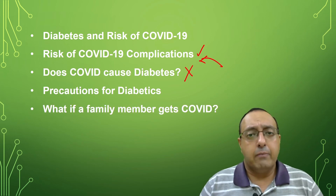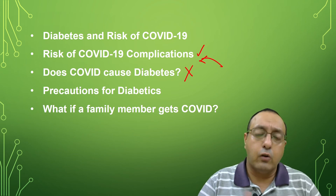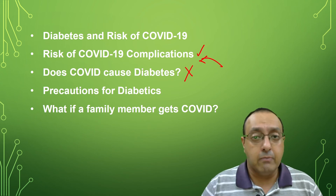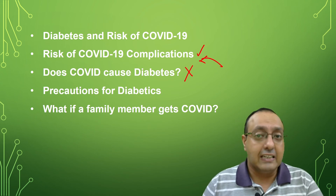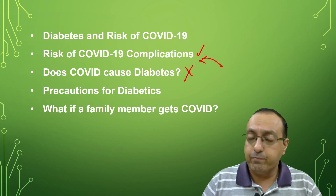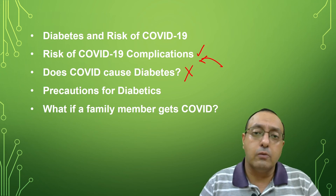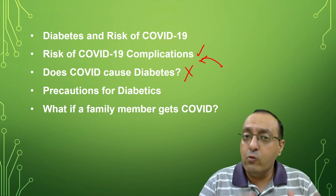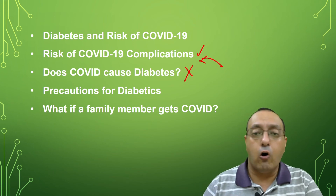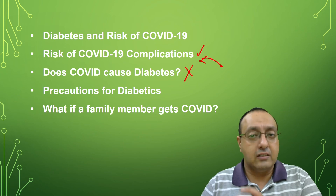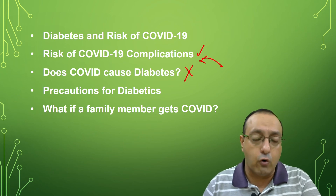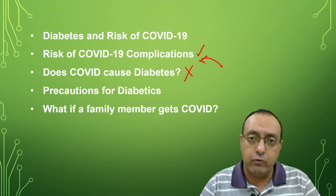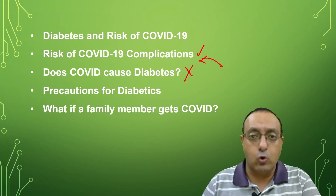What if a family member gets COVID? If there is a family where one or more people have diabetes and a non-diabetic family member gets COVID, the first thing to do is isolate that COVID-positive person in a single room. Only one caretaker should handle all care for that person, to minimize the chance of transmission to the diabetic family members. That is the appropriate precaution when someone in your family gets COVID.